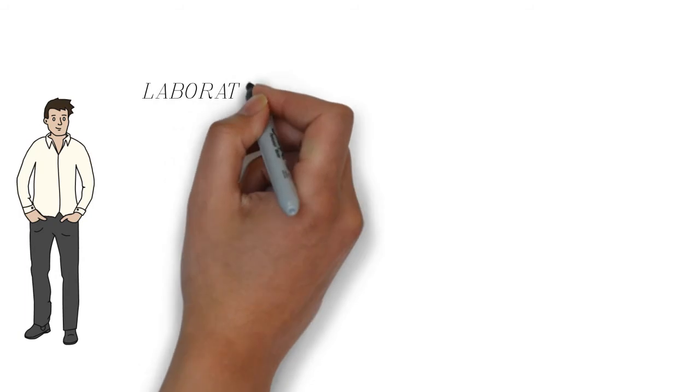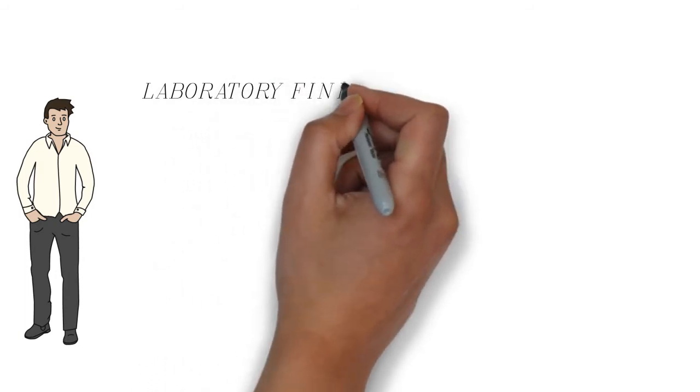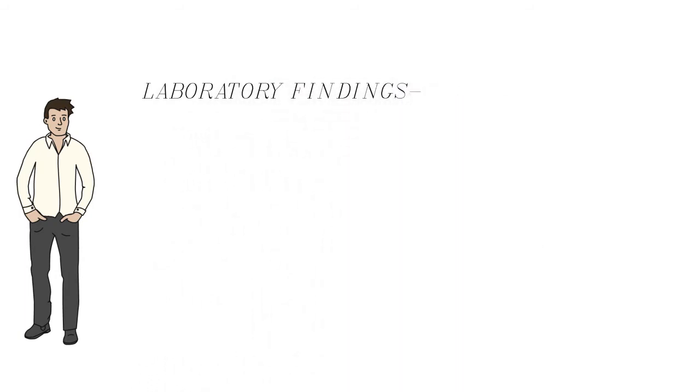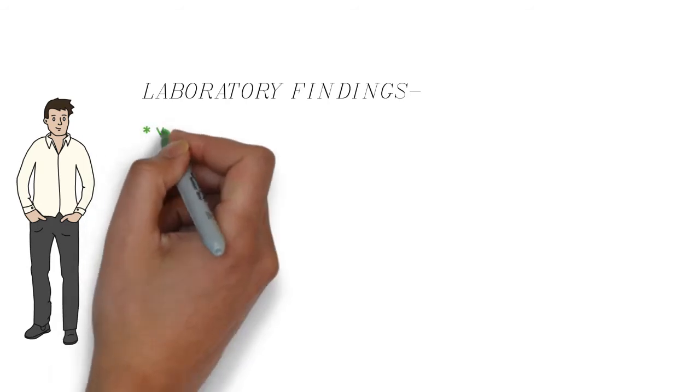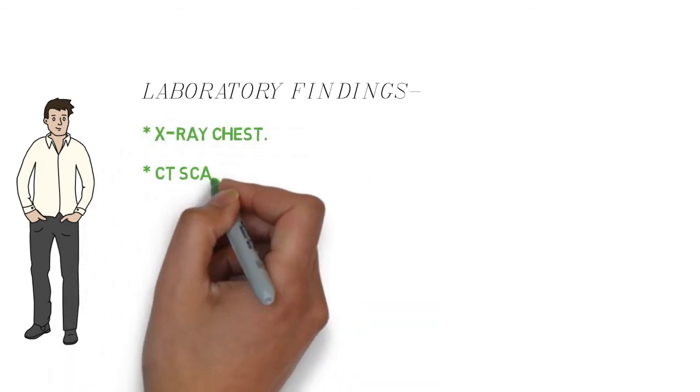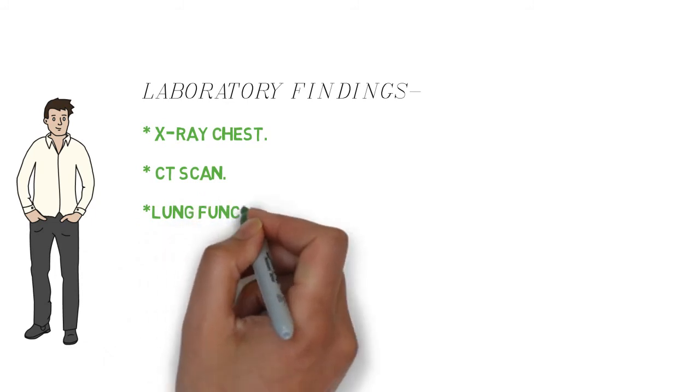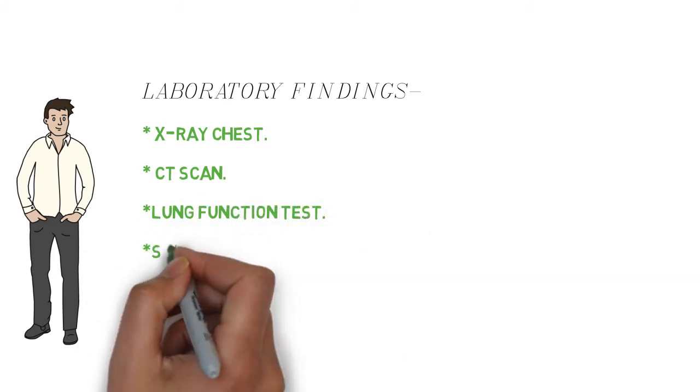Number five, check for severe malnutrition because it is a high risk factor for acute respiratory infection. There are also some laboratory findings which help to diagnose the infection, these are like X-ray test, CT scan, lung function test, swab test, etc.